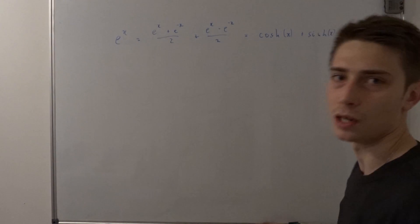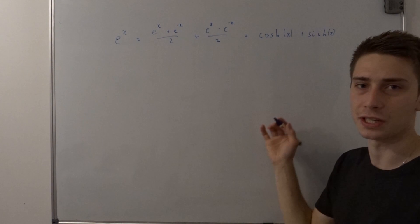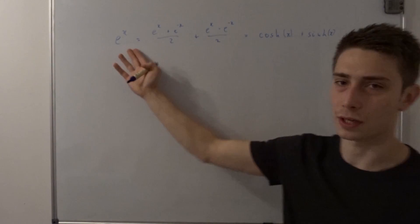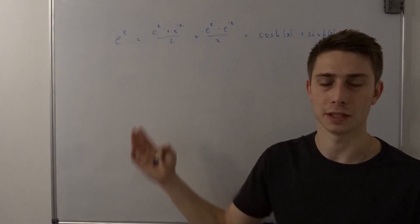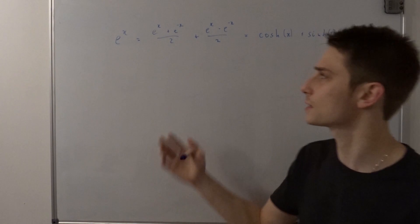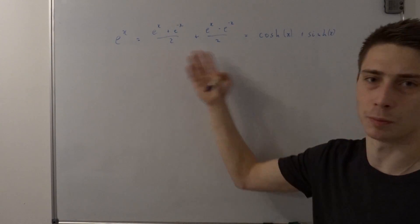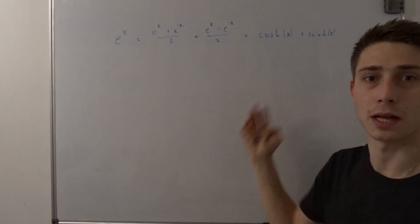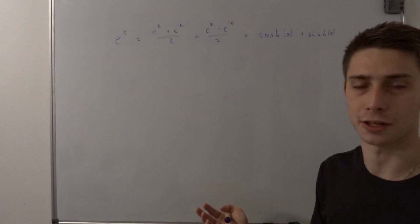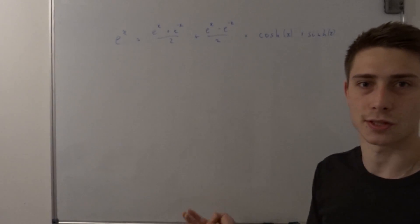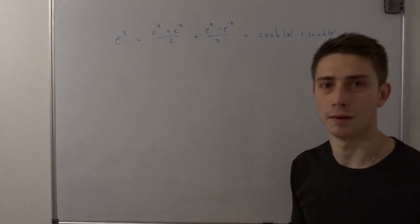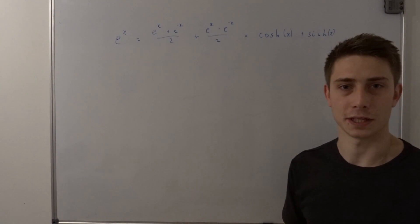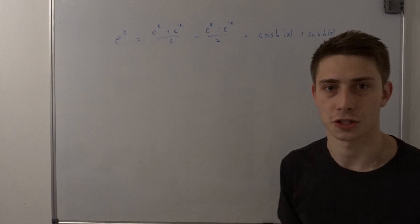And we use this a lot. You can also look at e to the ix, and this will become the cosine of x plus i sine of x. That's also the way of breaking down a function.